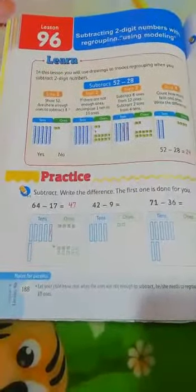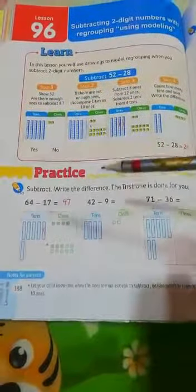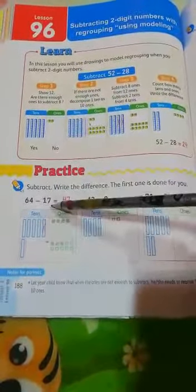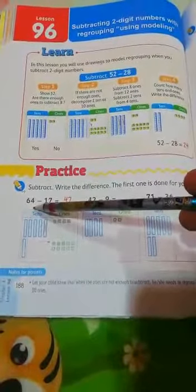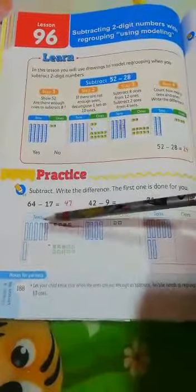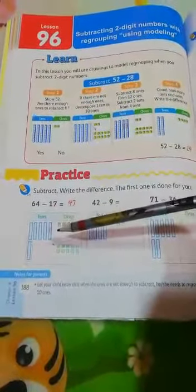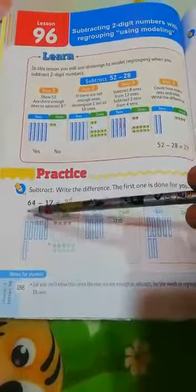And now let's subtract 7 from 4. Can I take 7 from 4? No, I can't. So I will decompose.